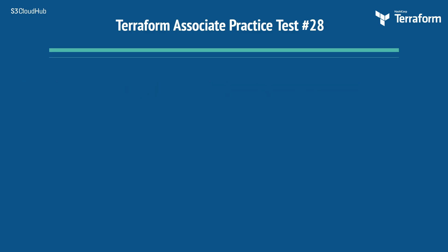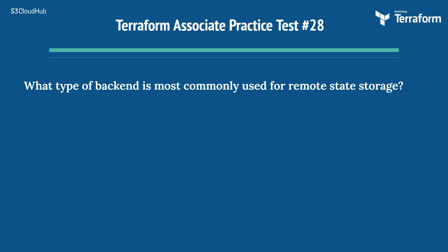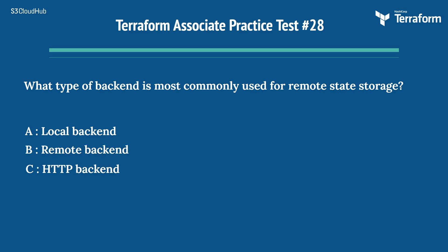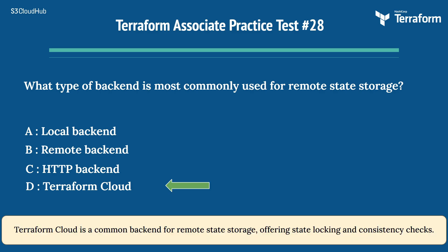Question 28: What type of backend is most commonly used for remote state storage? Options: A) Local backend, B) Remote backend, C) HTTP backend, D) Terraform Cloud. The right answer is D) Terraform Cloud. Terraform Cloud is a common backend for remote state storage, offering state locking and consistency checks.